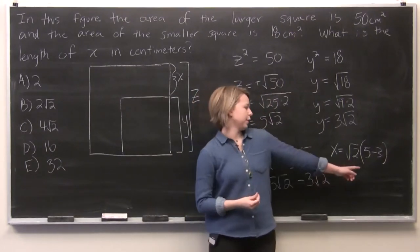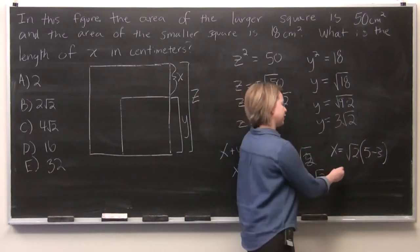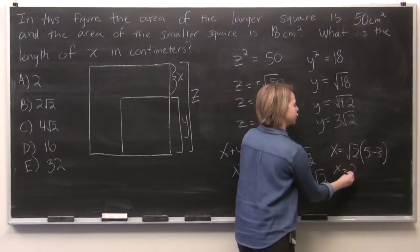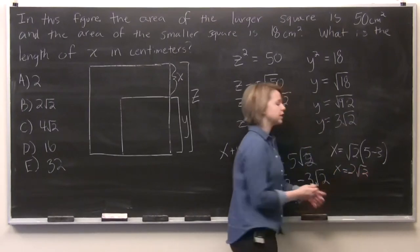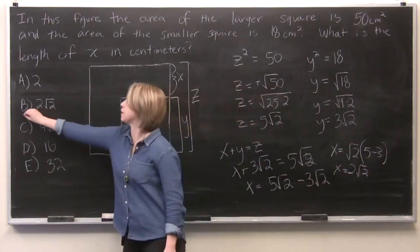And from here, we know that 5 minus 3 is simply 2. And so our x is equal to 2 times the square root of 2, which gives us answer choice b.